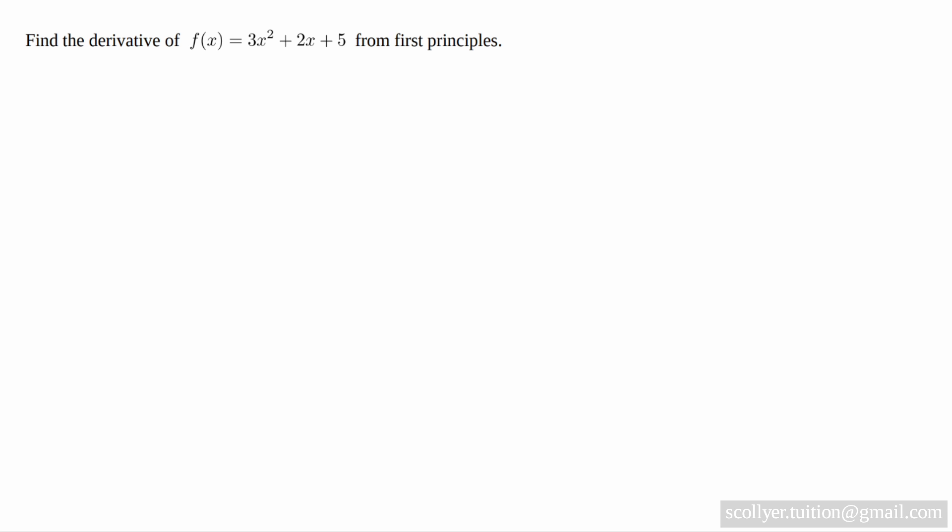Find the derivative of f(x) = 3x² + 2x + 5 from first principles. To find f'(x), we have to compute the limit as h tends to zero of [f(x + h) - f(x)] / h.